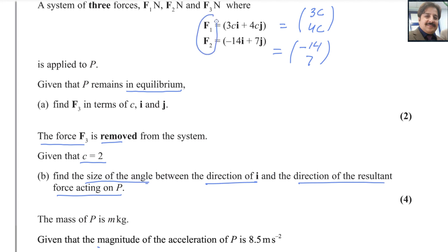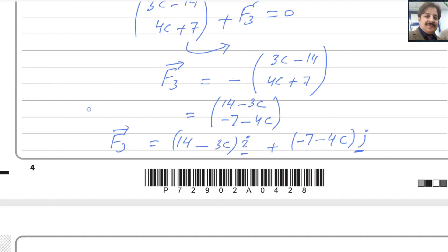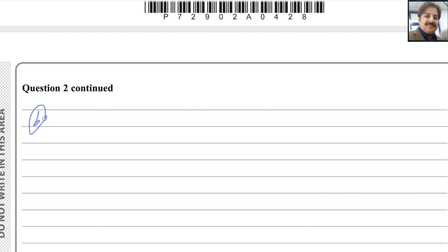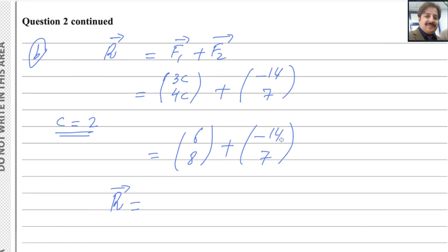We need to find the resultant force. R could be found by using the addition of F1 and F2. That is 3c and 4c plus F2 is minus 14 and 7. Value of c is 2. So plug in the value: this becomes 6, 4 multiplied by 2 is 8, plus minus 14 and 7. R could be found by adding these two corresponding numbers: 6 minus 14 is minus 8 and 8 plus 7 is 15. So this is the resultant force.